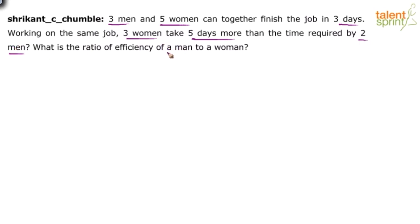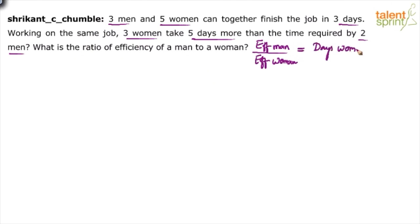Efficiency is nothing but capacity. Capacity is one divided by the number of days. So the efficiency of a man divided by the efficiency of a woman equals the number of days required by a woman divided by the number of days required by a man. Capacity is the reciprocal of number of days — more days means less capacity.